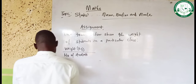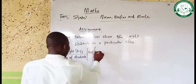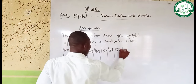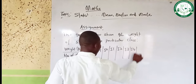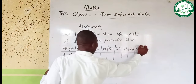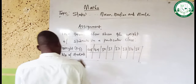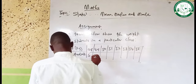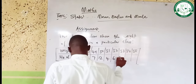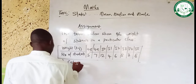We have weights from 48 to 55: that is 48, 49, 50, 51, 52, 53, 54, and 55. And the number of students (frequency) for each weight are: 5, 4, 7, 12, 4, 6, 5, 3.